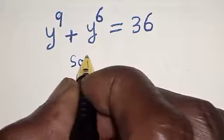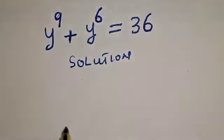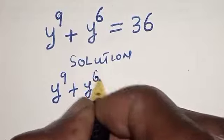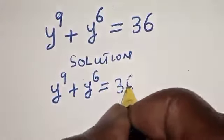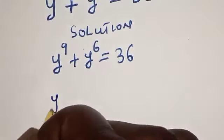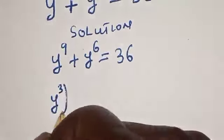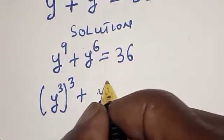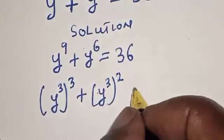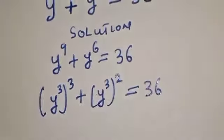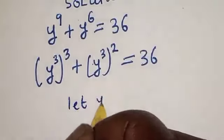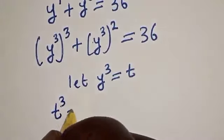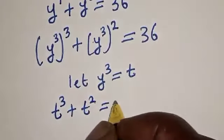Solution. We have the given equation y raised to power 9 plus y raised to power 6 is equal to 36. Then y raised to power 9 can be expressed as y raised to power 3, raised to power 3, plus y raised to power 6 — same as y raised to power 3 squared — is equal to 36. Now let y raised to power 3 equal t. We have t raised to power 3 plus t squared is equal to 36.